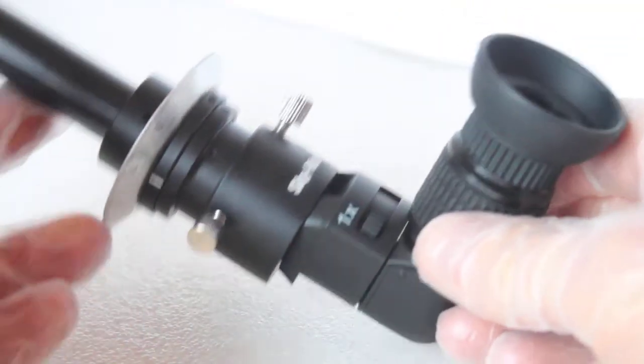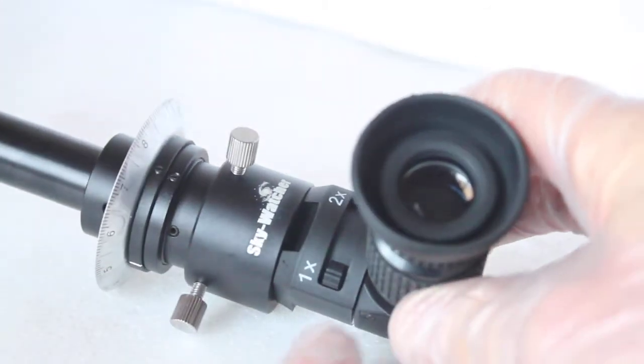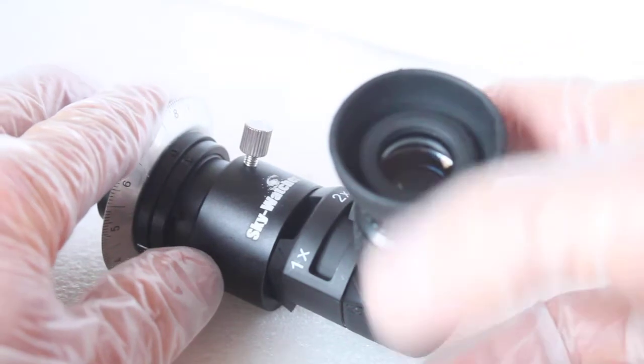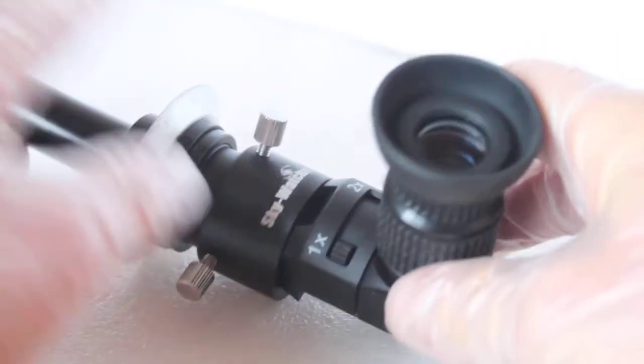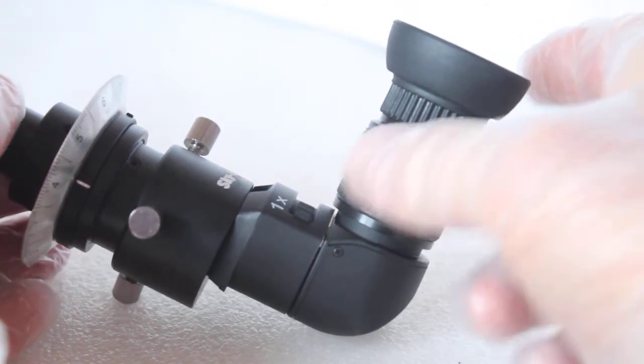You'll also notice here one and two times, so you can zoom in on the engraving for a more detailed look. You can focus here. This is not focusing on the stars; this is for focusing on the engraving on the polar scope.